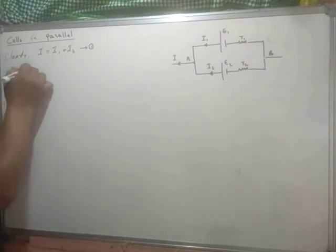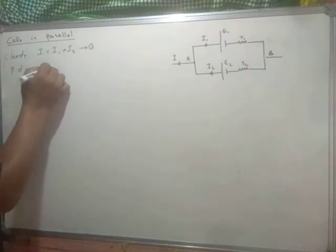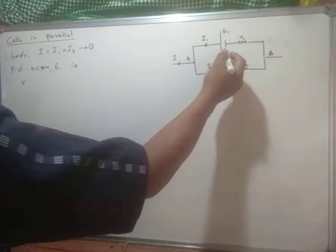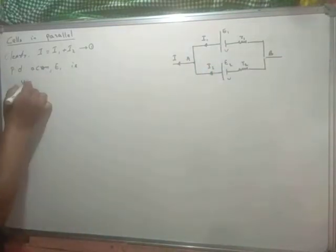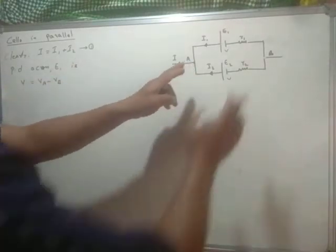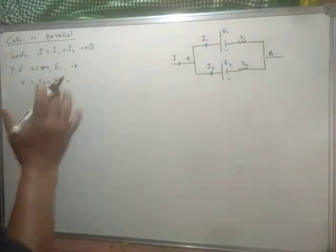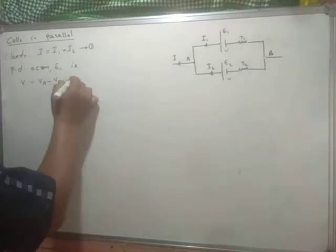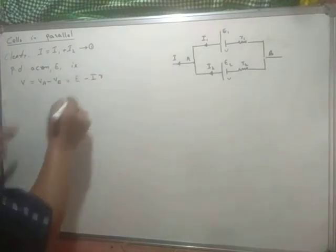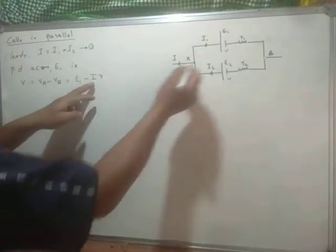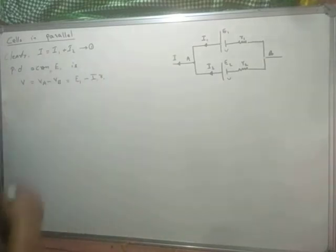I will write the potential difference across the first cell as V, which is V_A minus V_B — the difference of potential between point A and point B. From the relation between E and V, V can be written as E minus IR. In this case, for the first cell, the EMF is E1, the current is I1, and the internal resistance is R1.